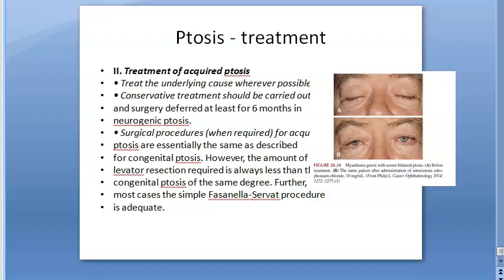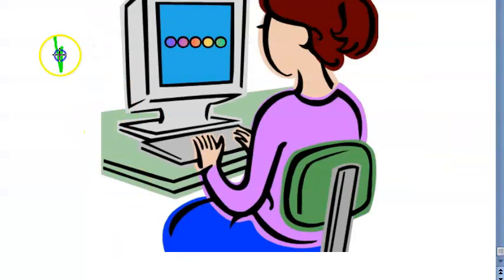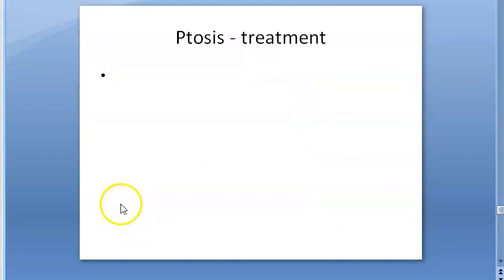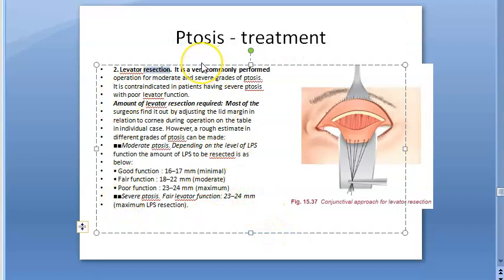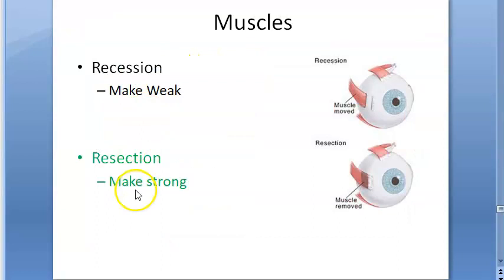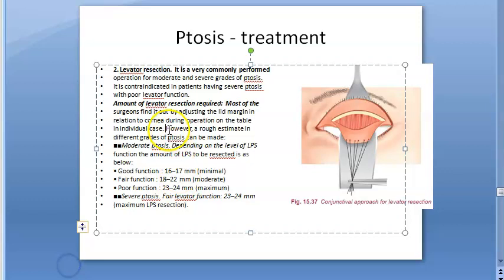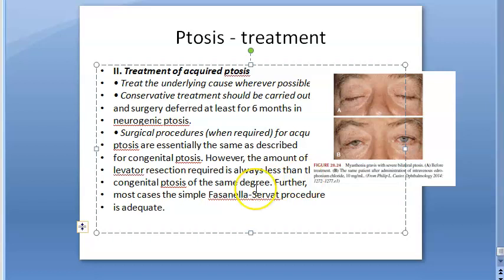Now for the treatment of acquired ptosis: previously for congenital we saw Mullerectomy, then levator resection — resection means removing a part of the muscle and reinserting it back at its original insertion, making the muscle shorter and stronger — and finally frontalis sling. Levator resection is an important term; in squint surgery you also have recession versus resection, and here it is resection for ptosis.